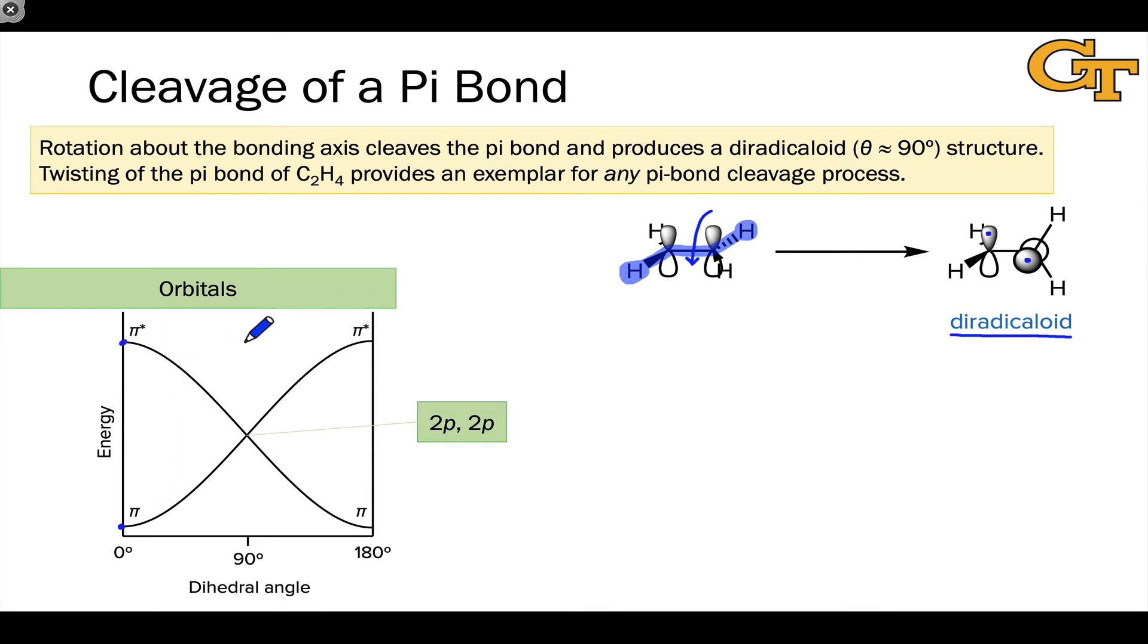But as this rotation starts to happen, that interaction starts to get weaker and we very quickly enter a diradicaloid region near the middle of the graph. When we hit the 90 degree point, the two p orbitals are completely degenerate because there is no net overlap between these p orbitals at right angles. We've got simply two 2p orbitals.